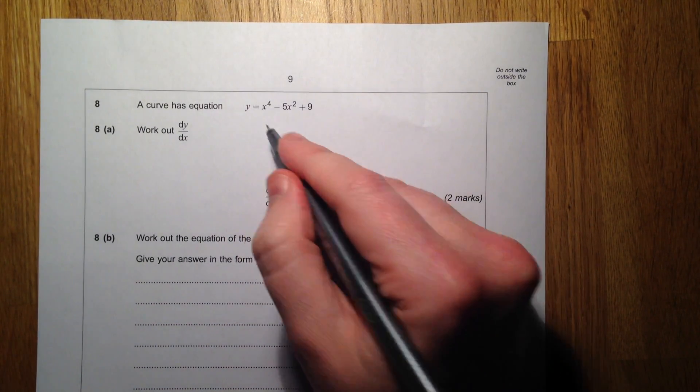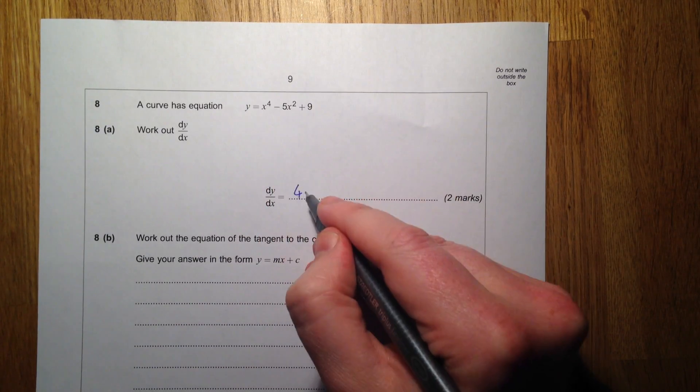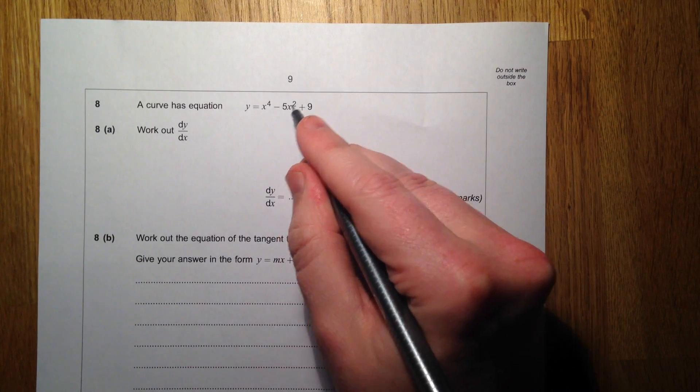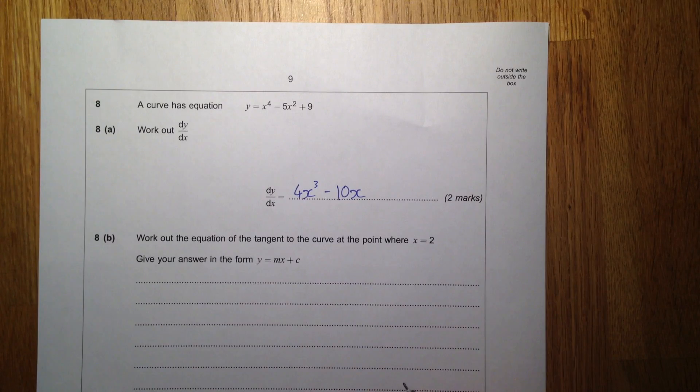Question 8, we're going to do some simple differentiation. Bring the power down by 1, multiply by it first. 2 times 5 is 10, bring the power down, the 9 just disappears.